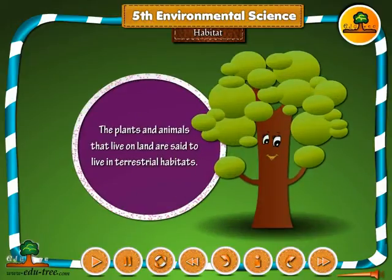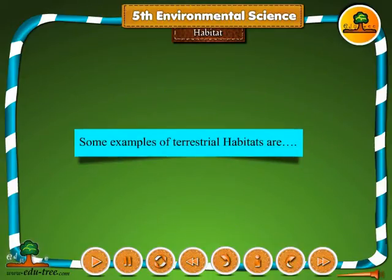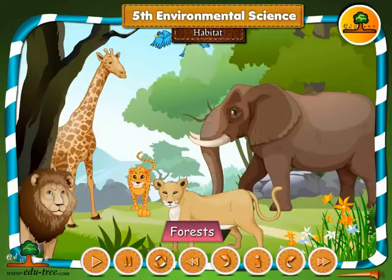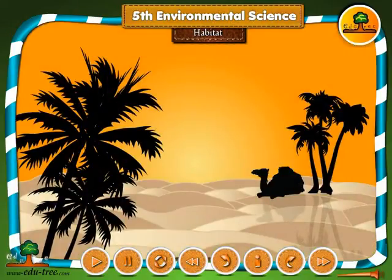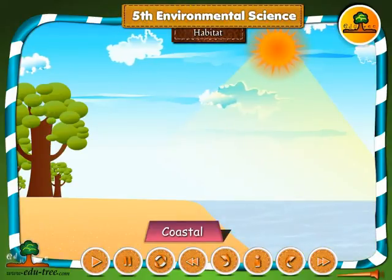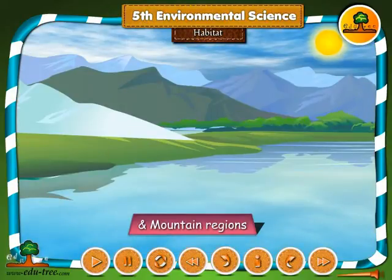The plants and animals that live on land are said to live in terrestrial habitats. Some examples of terrestrial habitats are forests, grasslands, deserts, coastal and mountain regions.